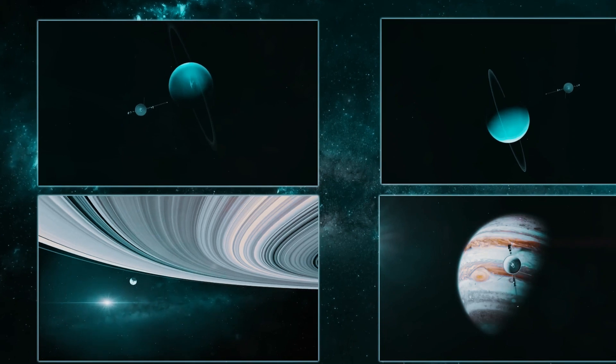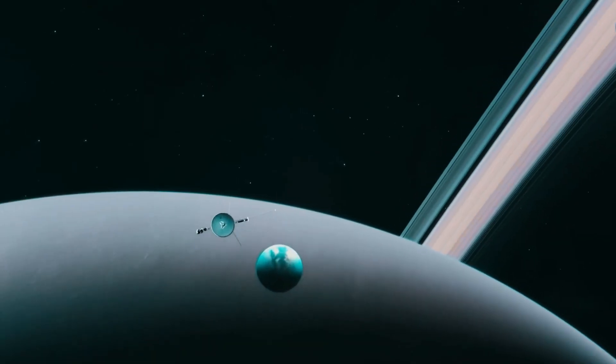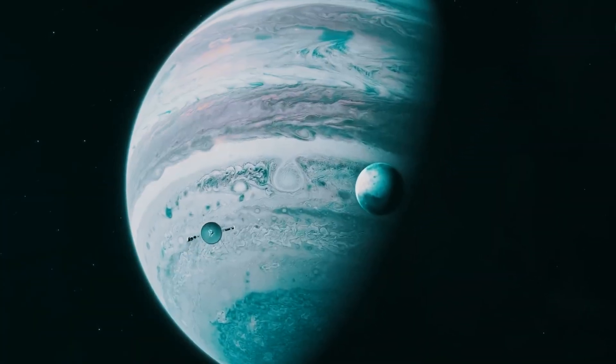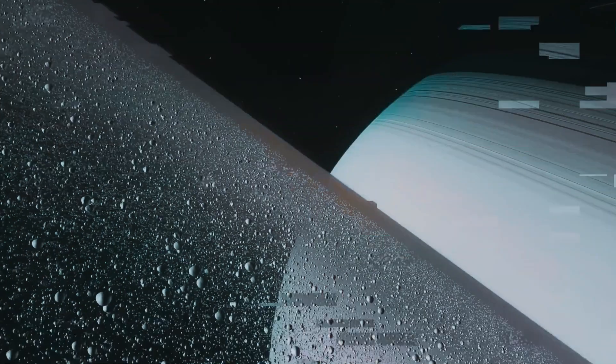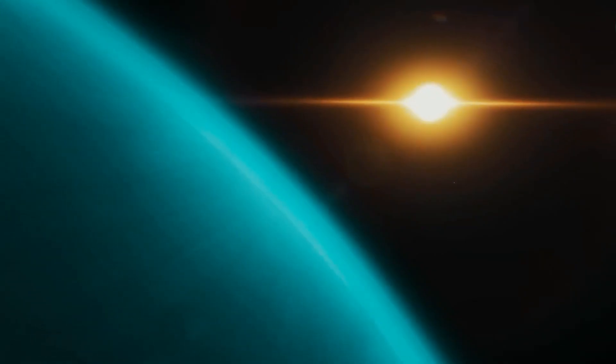Voyager 2 was the first spacecraft to perform a flyby of these four planets, sharing a lot of data with scientists. The data contained information about the planets' atmospheres, ongoing massive storms, and other physical features.